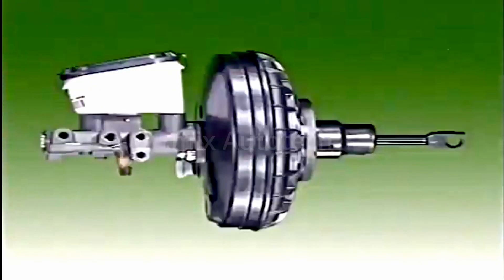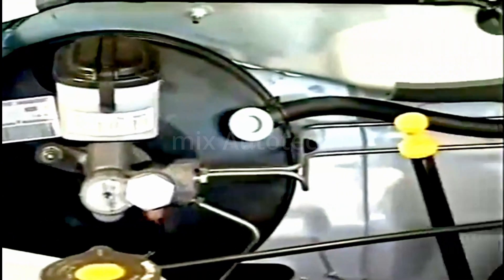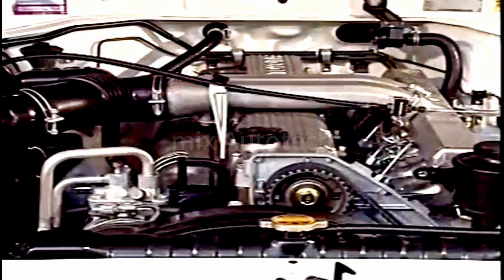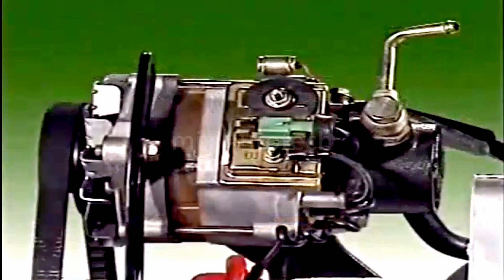This increases the pressures available from the master cylinder. Units on petrol engines use the vacuum produced in the intake manifold. Vehicles with diesel engines cannot use manifold vacuum so they are fitted with an engine driven vacuum pump.